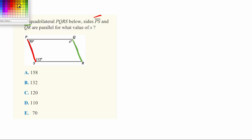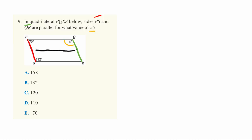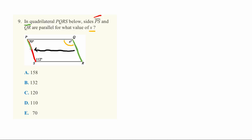They're also asking about some angle X, which is this angle right here. There are a couple of tricks to help understand this problem. One is to imagine that if you have parallel lines, you can slide QR over in this direction, and it would exactly line up over PS. That's one of the definitions of parallel lines, so we can imagine these lines are almost on top of each other.